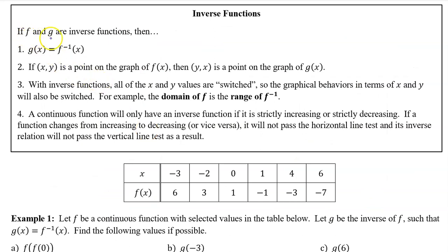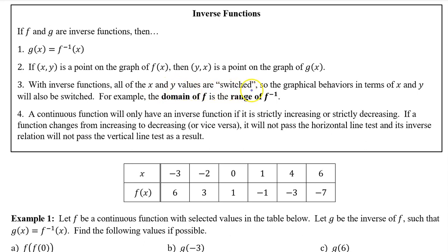If f and g are inverses, then several things are true. Number one, g of x equals f inverse. Number two, if a point x, y is a point on the graph of f, then the point y, x is a point on the graph of g. Number three, with inverse functions, all of the x and y values are switched.